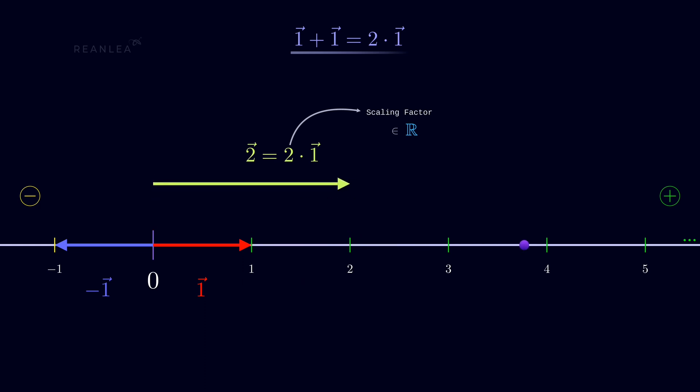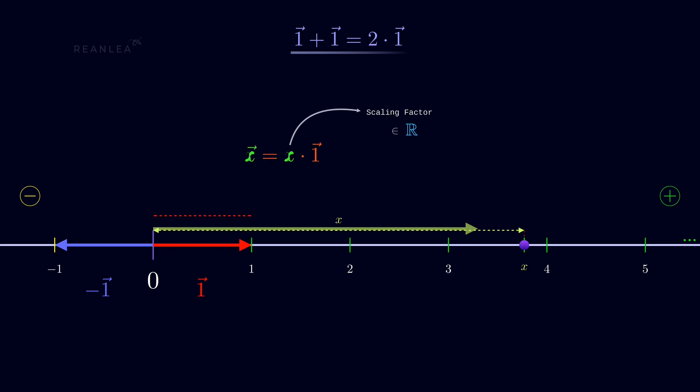We can represent every single vector by scaling the unit vector by some factor. In particular, if a vector extends from the origin by x times the unit length, it will be placed at static position x on the real axis, representing vector x — which we obtain by scaling the unit vector by scalar x.